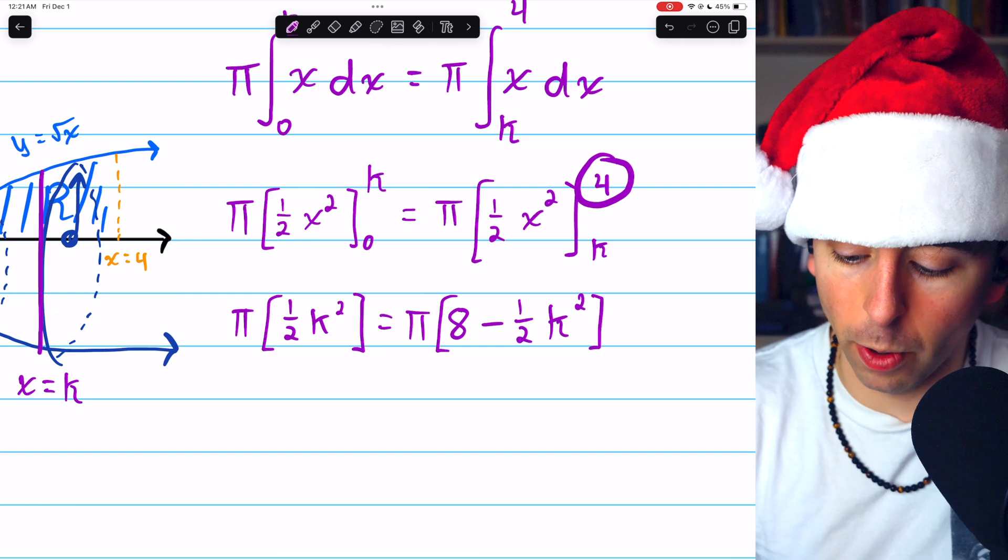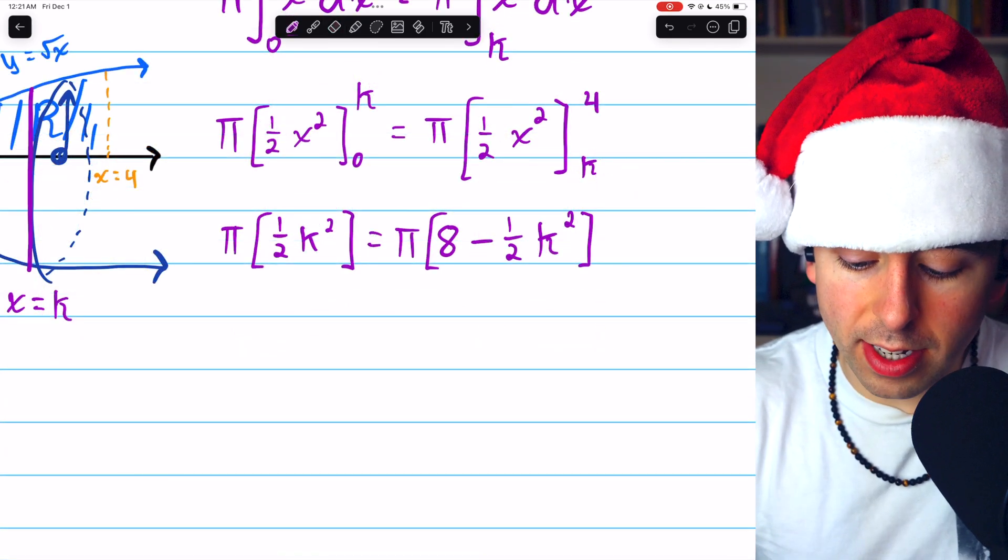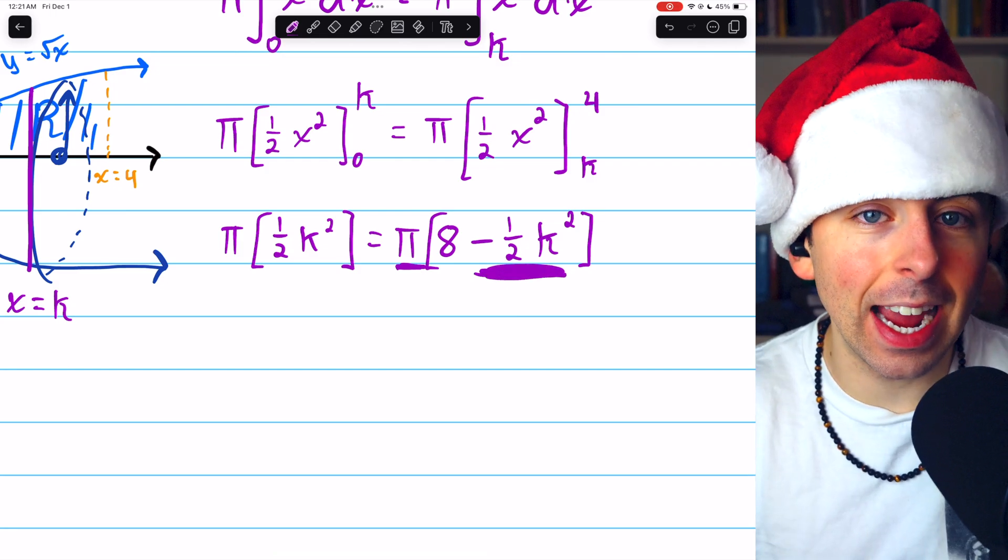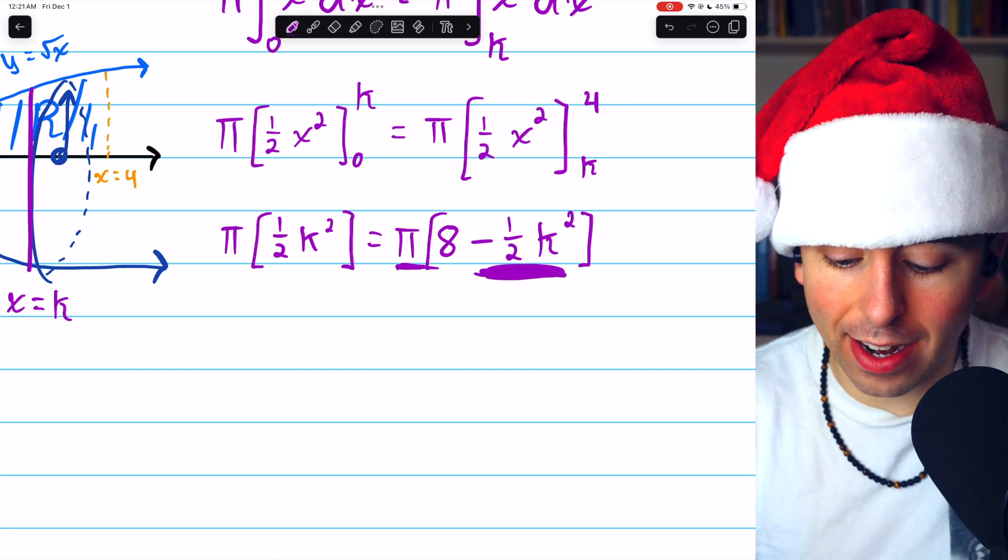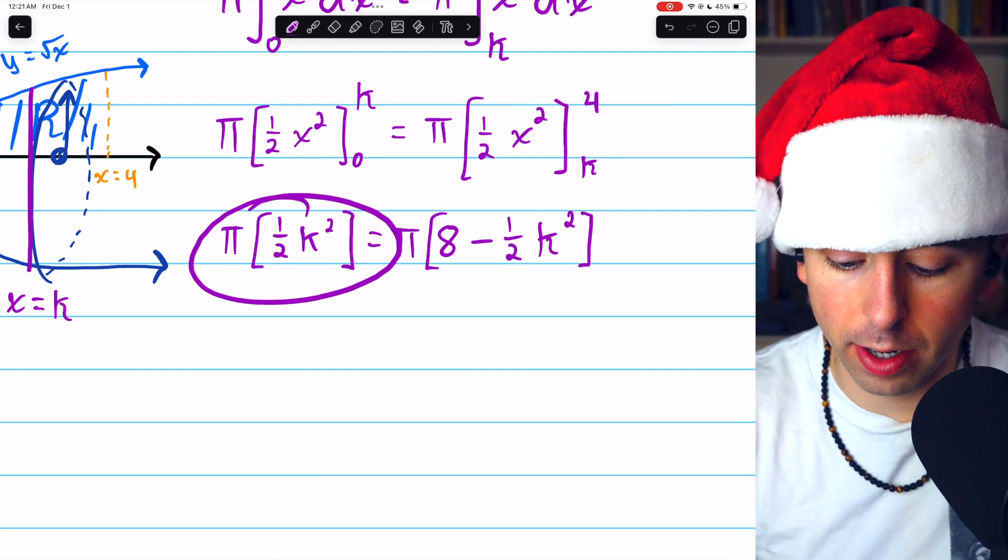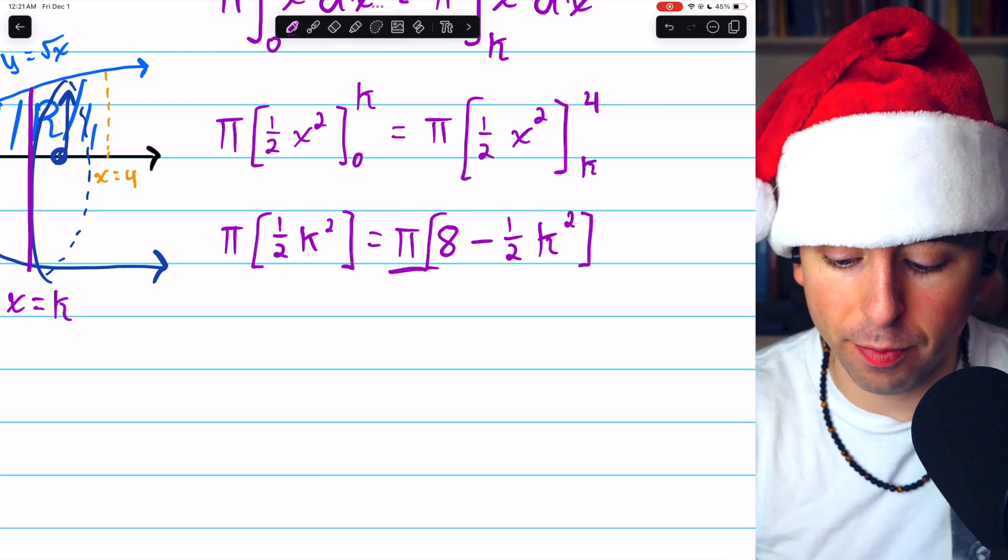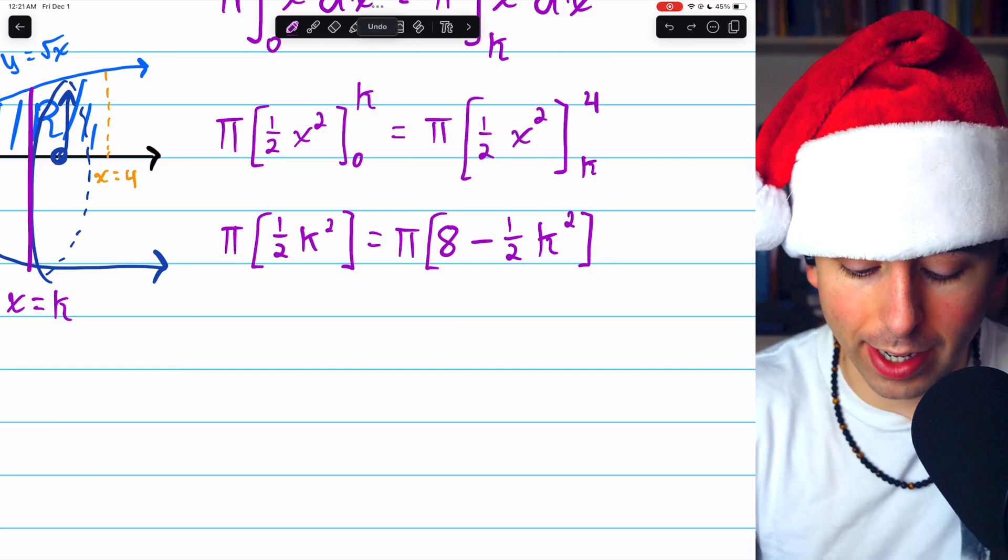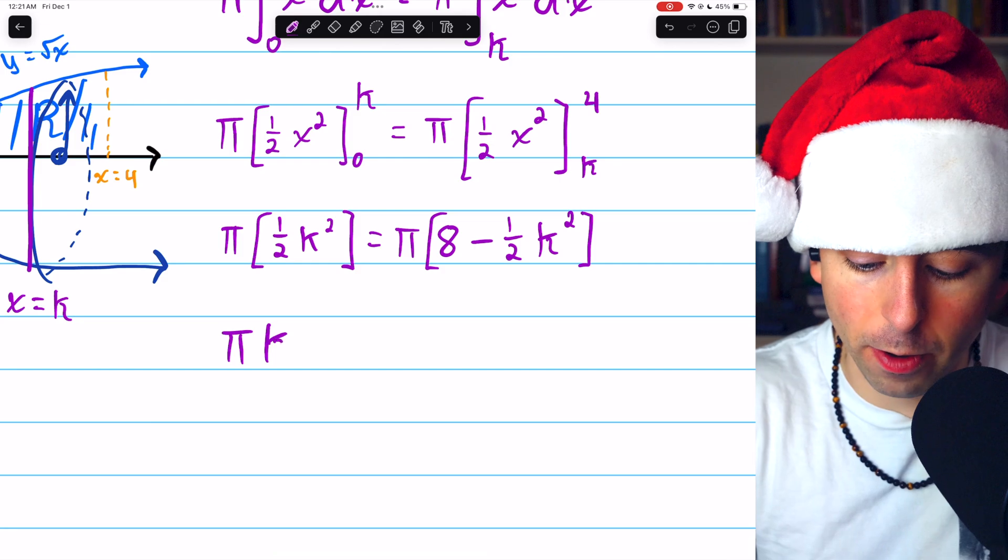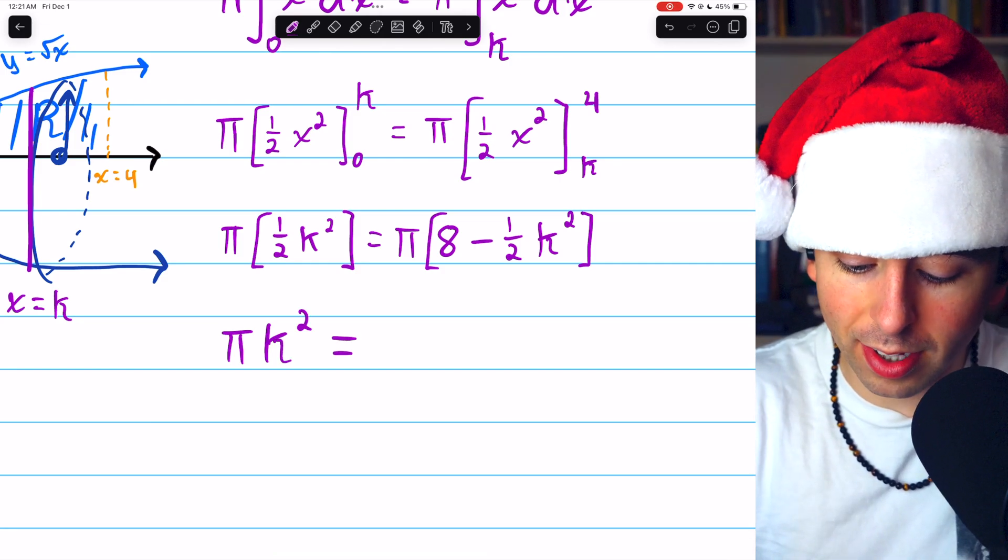And now we'll just have to solve this for K. On the right, you can see that we have negative half pi K squared. So let's add that to both sides. On the right, we have 1 half pi K squared, and we're going to add another half pi K squared from the right. So that's going to give us a full pi K squared on the left, which equals 8 pi.